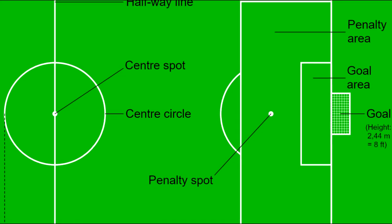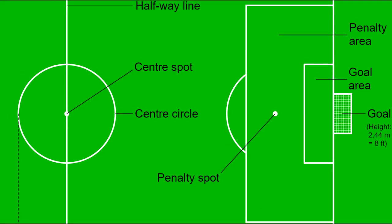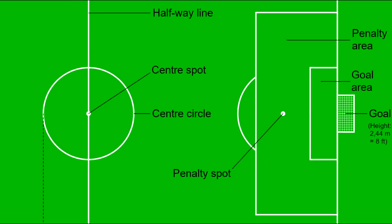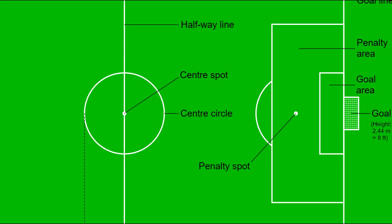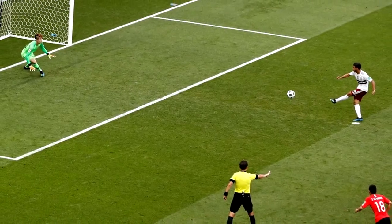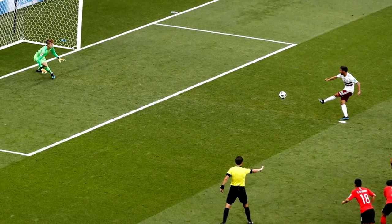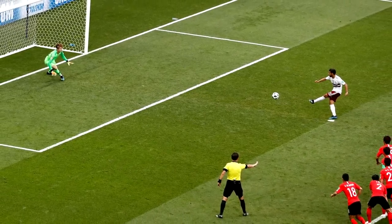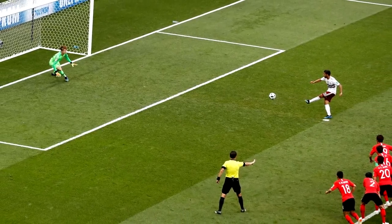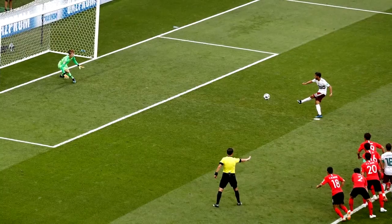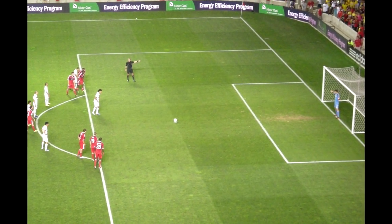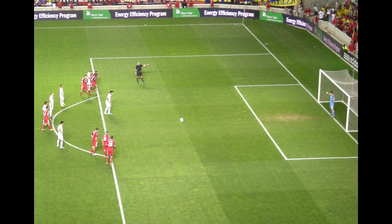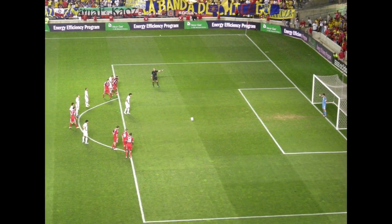If a foul that is usually punished by a direct free kick happens in the offending player's penalty area, then the other team is awarded a penalty kick. In a penalty kick, the ball is dropped onto the penalty mark, and a player gets a shot at the goal with no one but the goalkeeper to try to stop them. All other players must stay outside the penalty box and the penalty arc during this time.